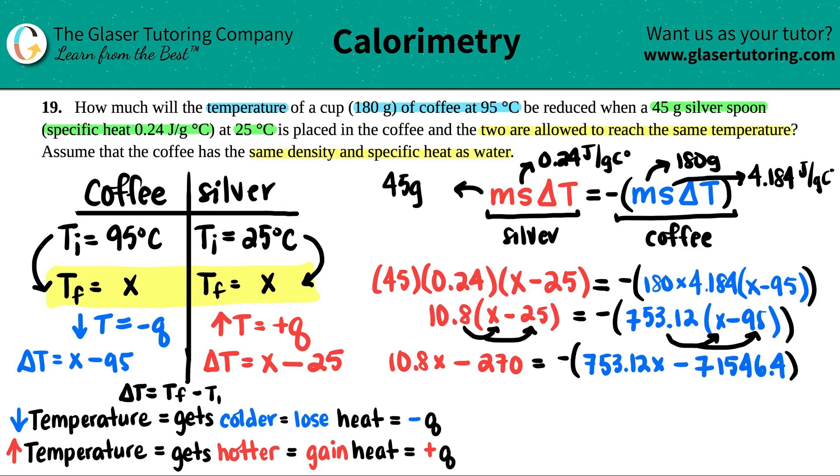So I have now 10.8x minus 10.8 times 25. And let's do this part, 753.12x minus 753.12 times 95, which is 71546.4. Now what I'm going to do is I'm just going to distribute this negative finally into, you're distributing it again. You're turning this negative and you're turning this positive. So I can get rid of the parentheses and say that the first one now is a negative value and the second one is a positive because I technically multiplied by the negative one.